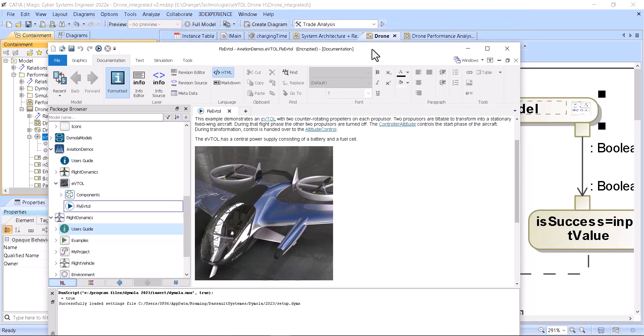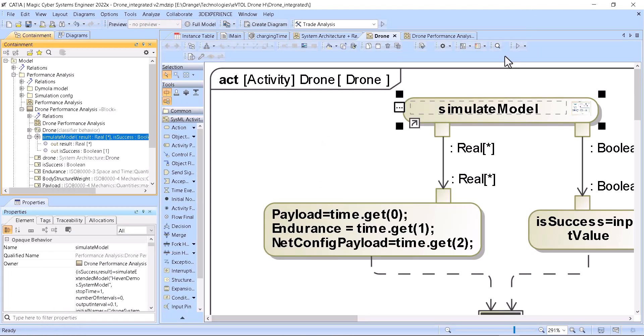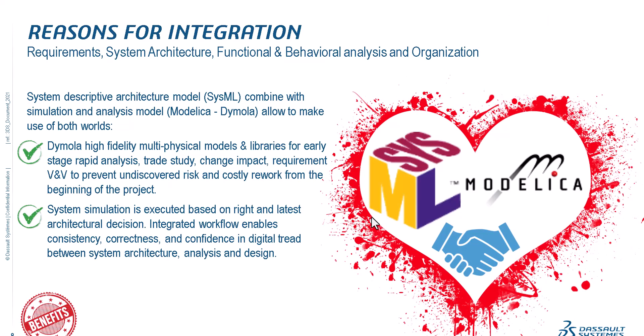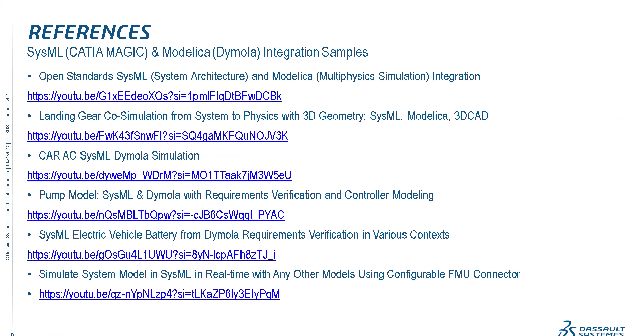That's the power of this tool and the power of integration — we have the best of both worlds. We have system descriptive architecture in SysML combined with simulation analysis models in Modelica. Dymola allows us to make use of both: high-fidelity multi-physics models and libraries for early-stage rapid analysis, trade studies, change impact, and requirements VnV — preventing undiscovered risk and costly rework from the beginning of the project. System simulation is executed based on the right and latest architectural decisions.